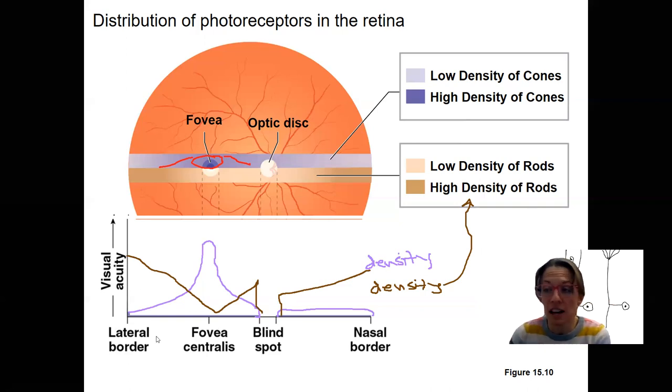From fovea centralis to the two sides of your eye. The result of the different density of these two types of photoreceptors is that visual acuity, which means the ability to see well. For example, if you do a Snellen eye test where you're looking at, is this an E or is it an E this way, the ability to do that well is really at your fovea. You have very high acuity at your fovea.